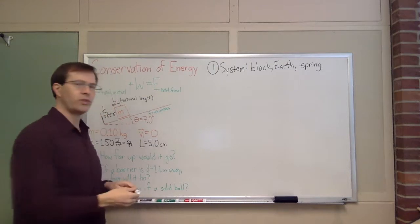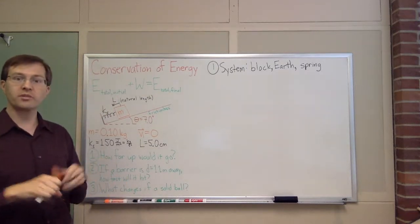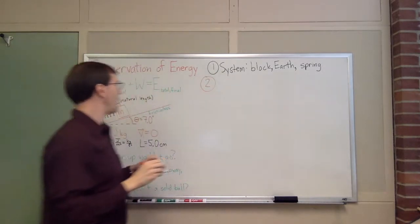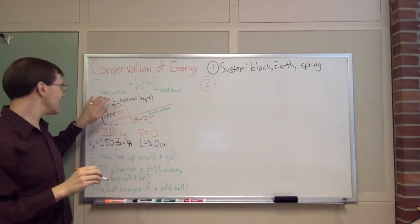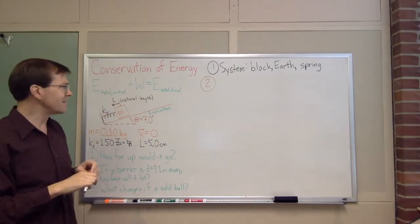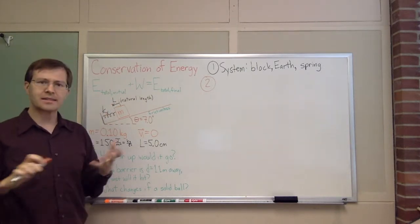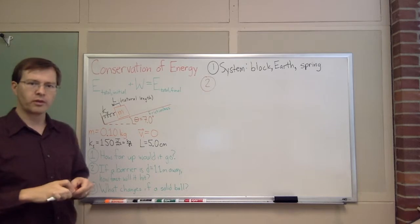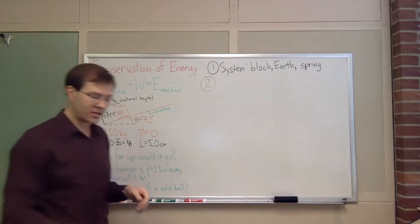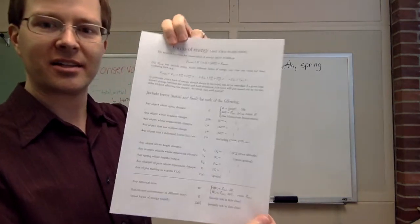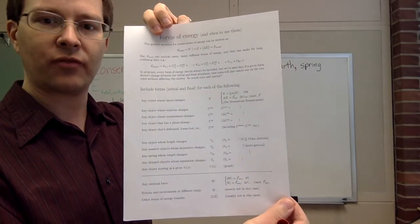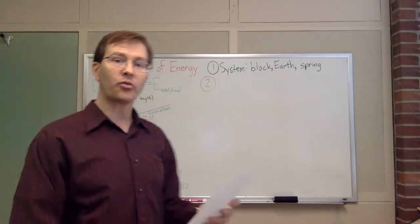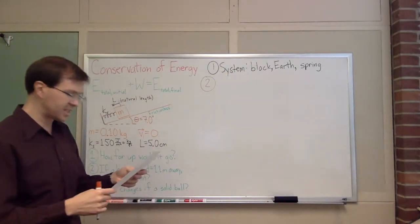And step two, then, is to say what forms of energy are going to be significant in this problem. Really, I'm just breaking down what is e-total in this story. How do I do that? There's sort of an art to it, figuring out what's going to be relevant in a given problem, figuring out what's important. But, when in doubt, it turns out I've got a checklist. Look, it's a checklist. It's a checklist of just things that might be important. So I'm going to go through my checklist and see what's relevant here.